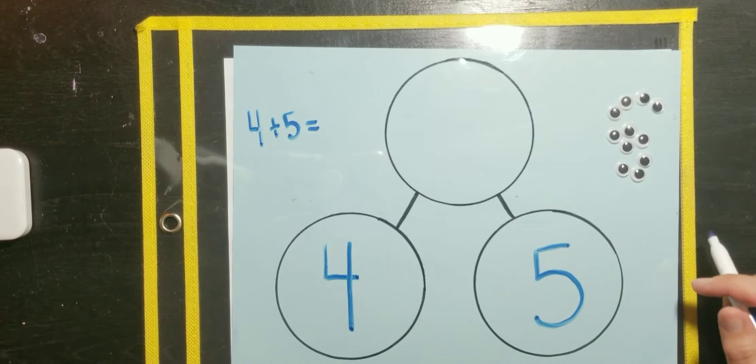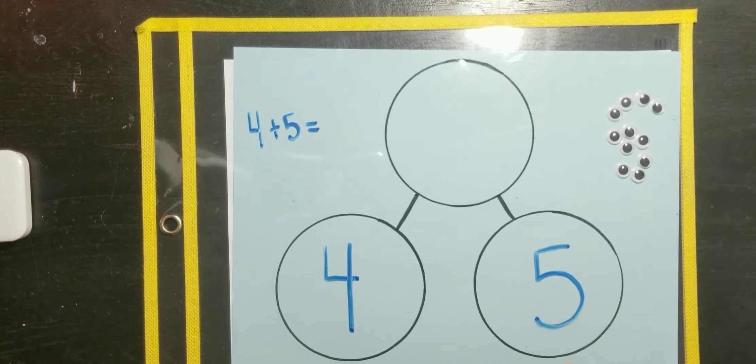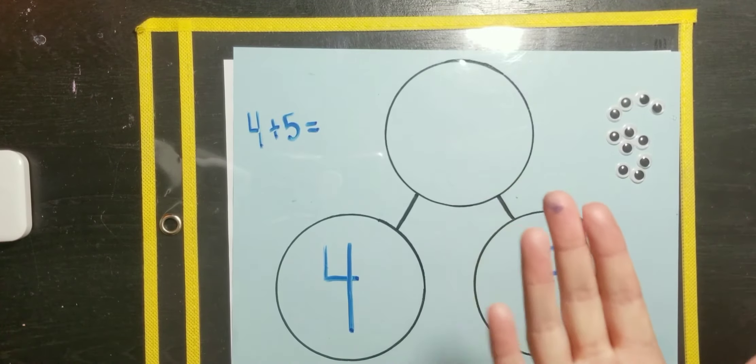And I want you to use your very smart brains and you can count your fingers, you can count your toes, you can count objects, you could draw tally marks, however you want to solve this problem. I think for today, I want to try counting on. So, I want you to start with the bigger number. Anytime we're counting on, we start with our bigger number, we put it in our brain. So, whisper it into your hand, five.